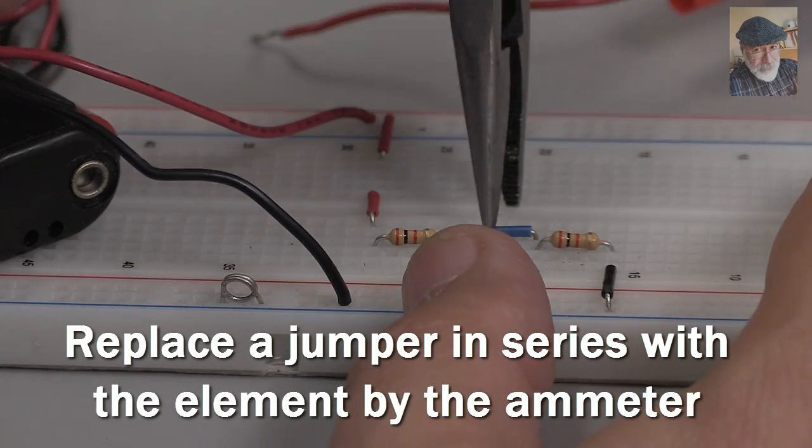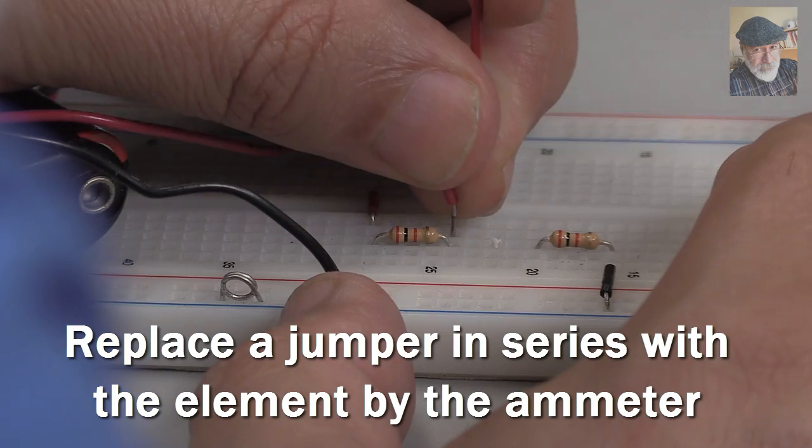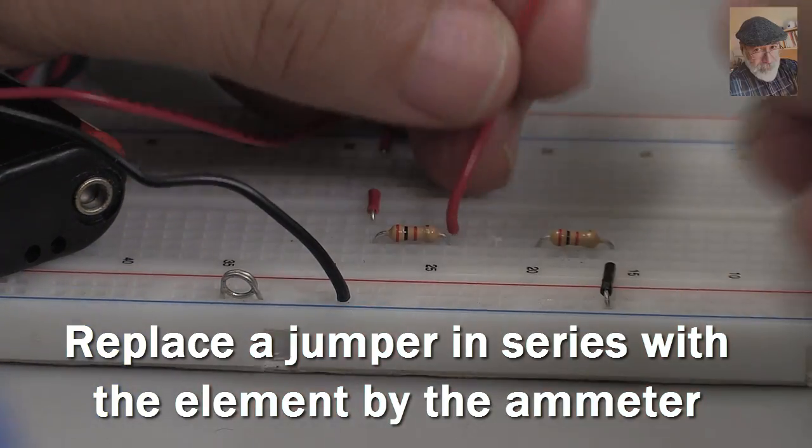Second, connect the ammeter in series with the element whose current you want to measure. That is, make the multimeter part of the branch.